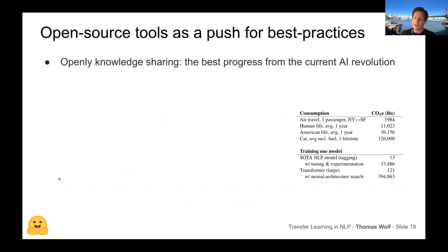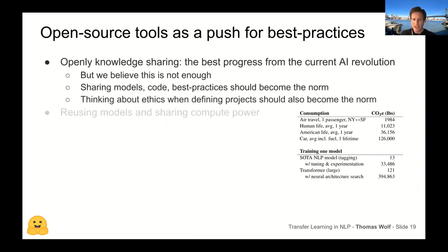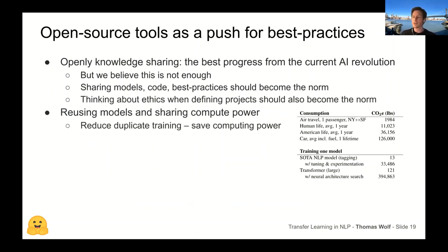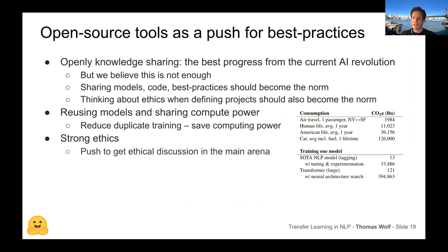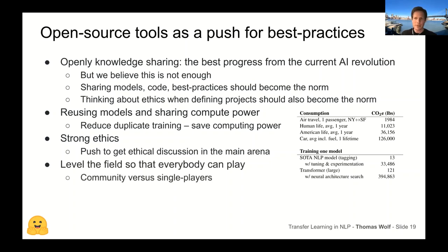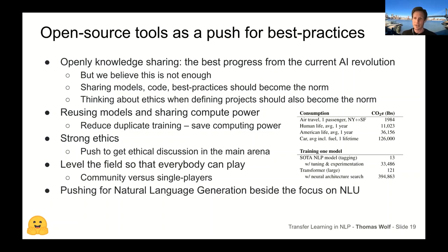Sharing models is very important because training them costs a lot of compute. There are interesting studies on how much compute power is used, and the answer is a lot. Sharing your trained model avoids the inefficiency of everyone retraining the same thing. We also push for ethical considerations: better reproducibility, and environmentally friendly NLP — trying to make models more efficient — which is what the SustainNLP workshop is about.